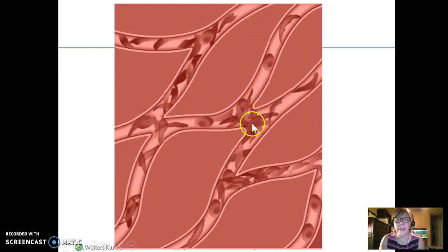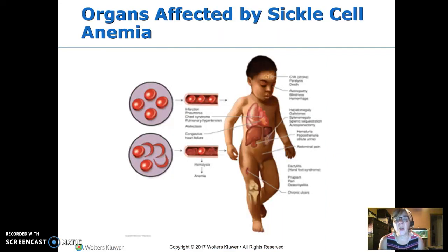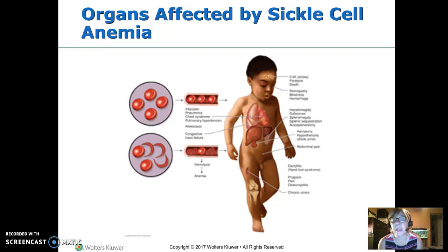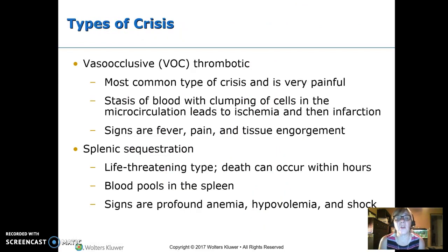The cells clump and then beyond them, things don't get through, so you get ischemic tissue. The organs most often affected include the joints, which are a big problem, but you can also have vital organs affected — the brain, causing a CVA; acute chest syndrome when it happens in the lungs; or the heart and spleen. Old blood clumps, blocks the microcirculation, and you get ischemia and little microinfarctions.